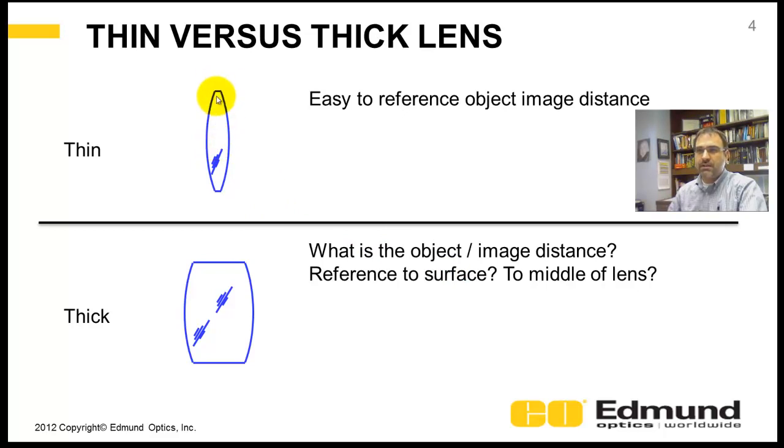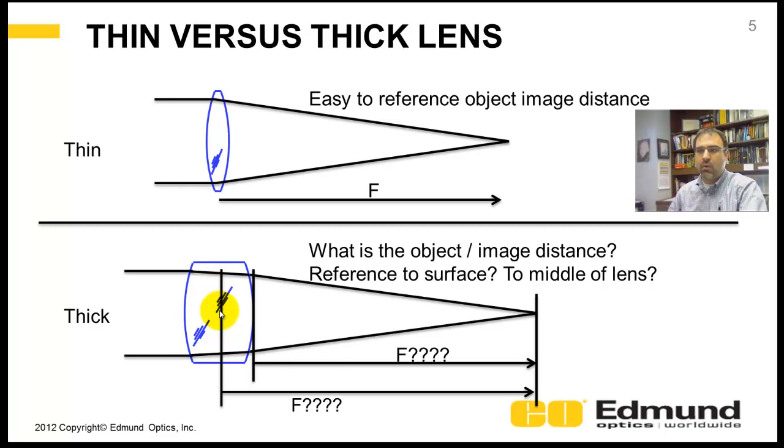With a thin lens, it's infinitesimally small. You know where to reference your measuring, your image and object distance relationships. But when you have a thick lens, if you're going to calculate focal length or object distance, where do you reference?